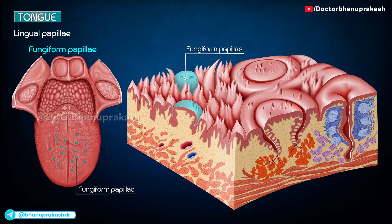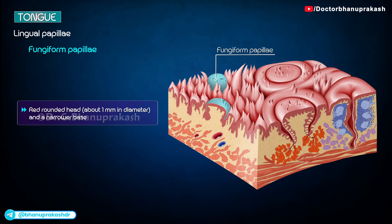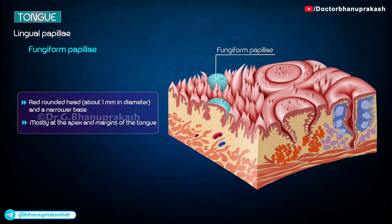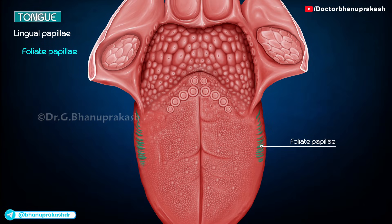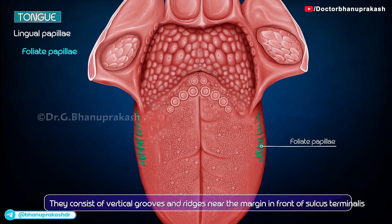Fungiform papillae have a red rounded head, about 1 mm in diameter, and are narrower at the base. They are situated mostly at the apex and margins of the tongue, while a few are spread over the dorsum. They are visible as discrete pink pinheads. Foliate papillae consist of irregular vertical grooves and ridges near the margin in front of the sulcus terminalis.